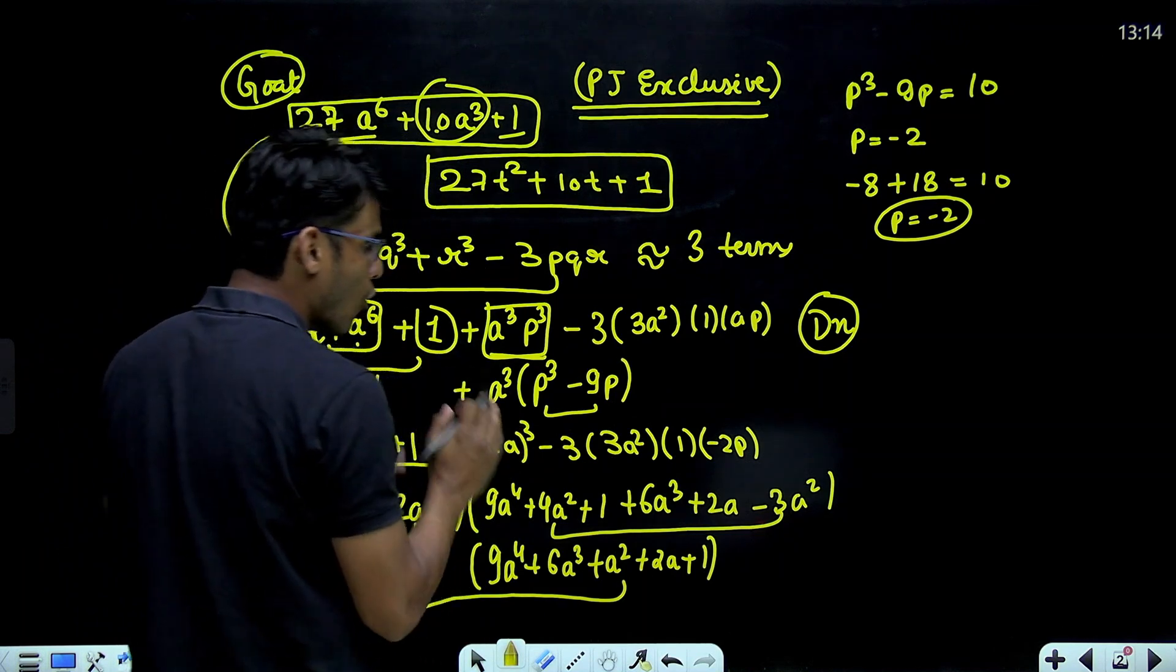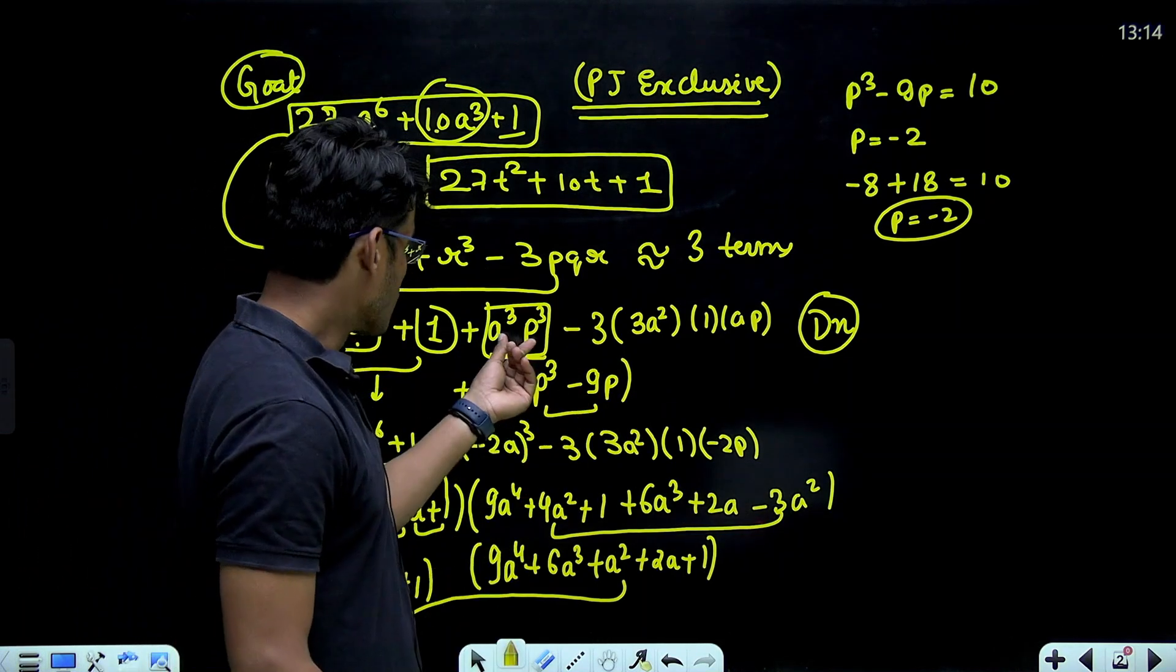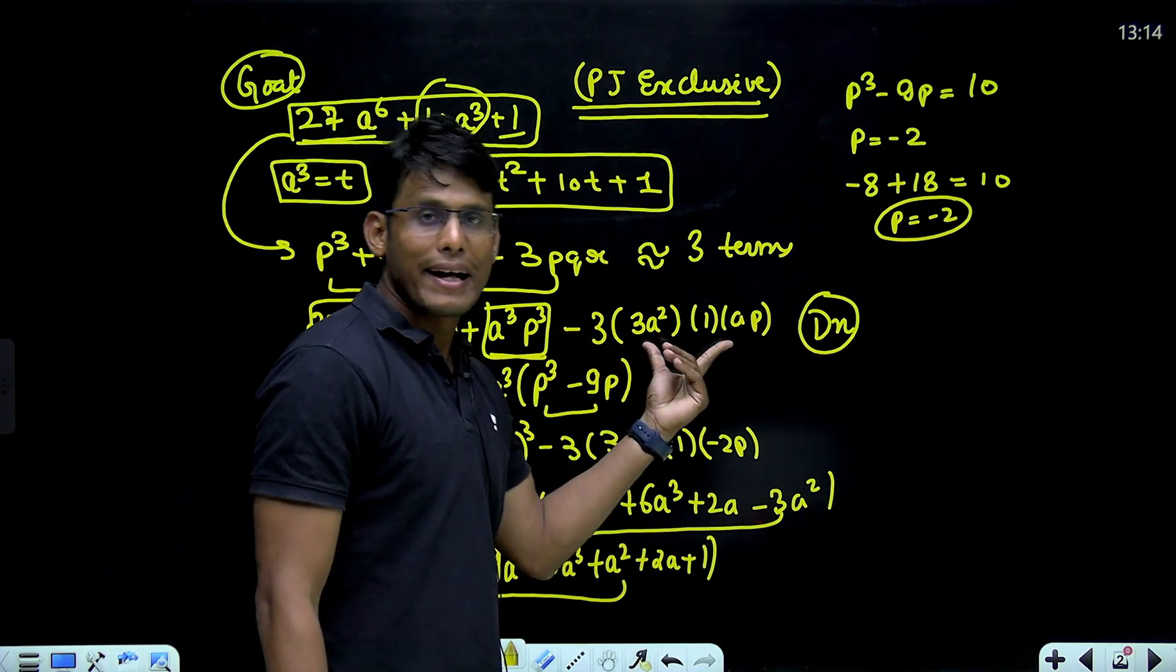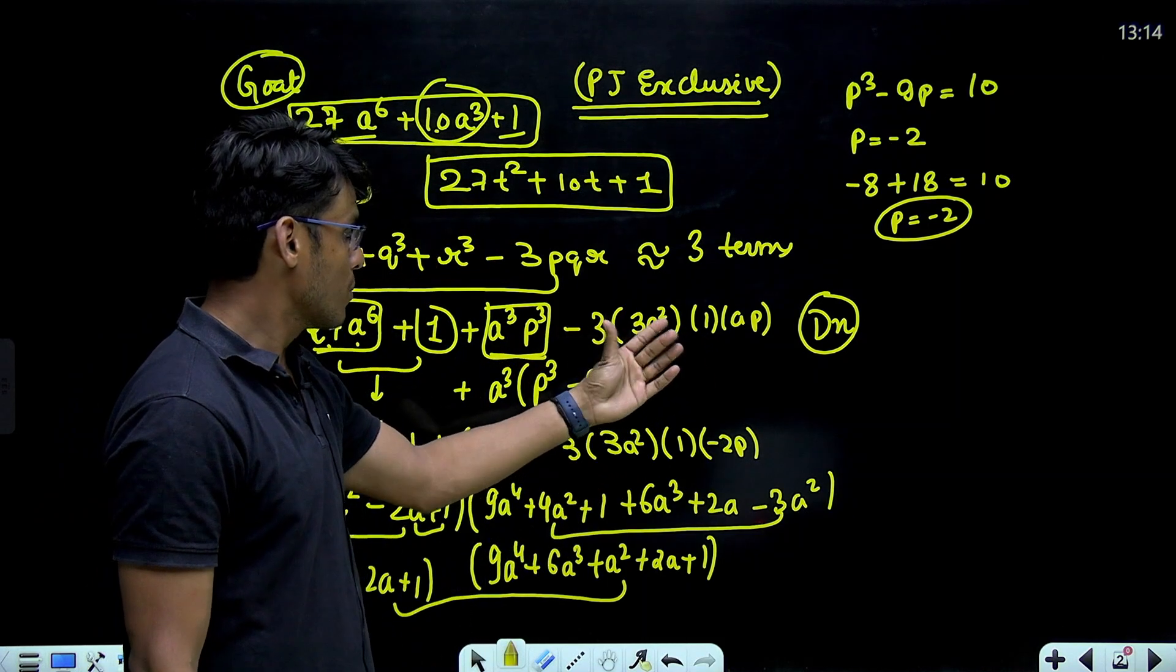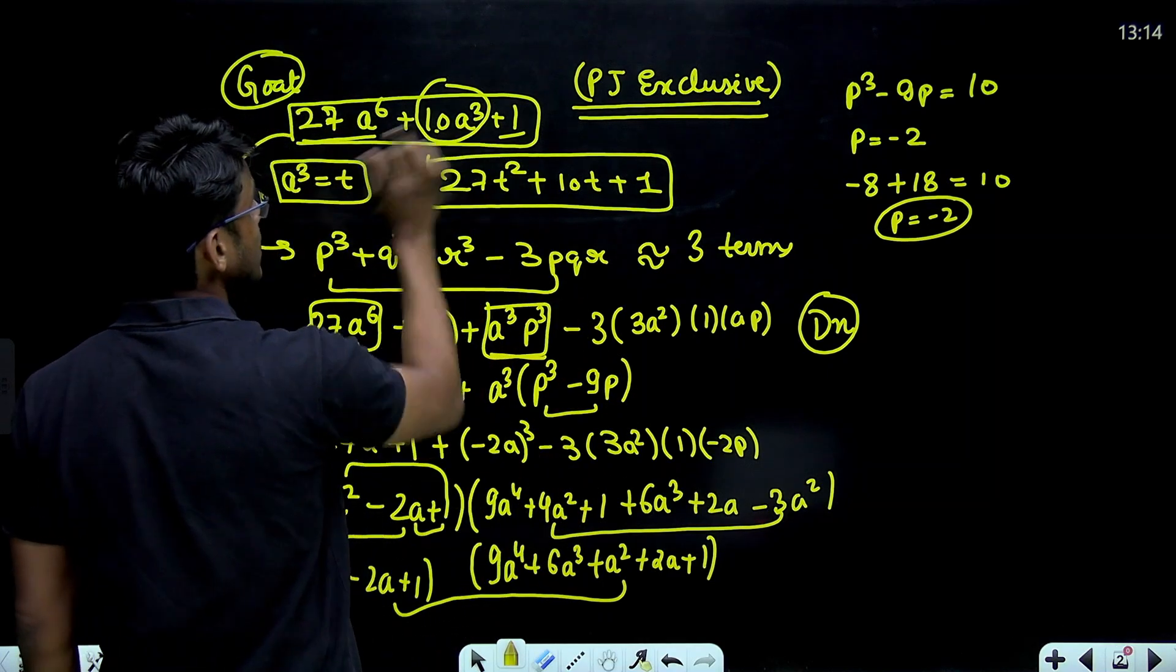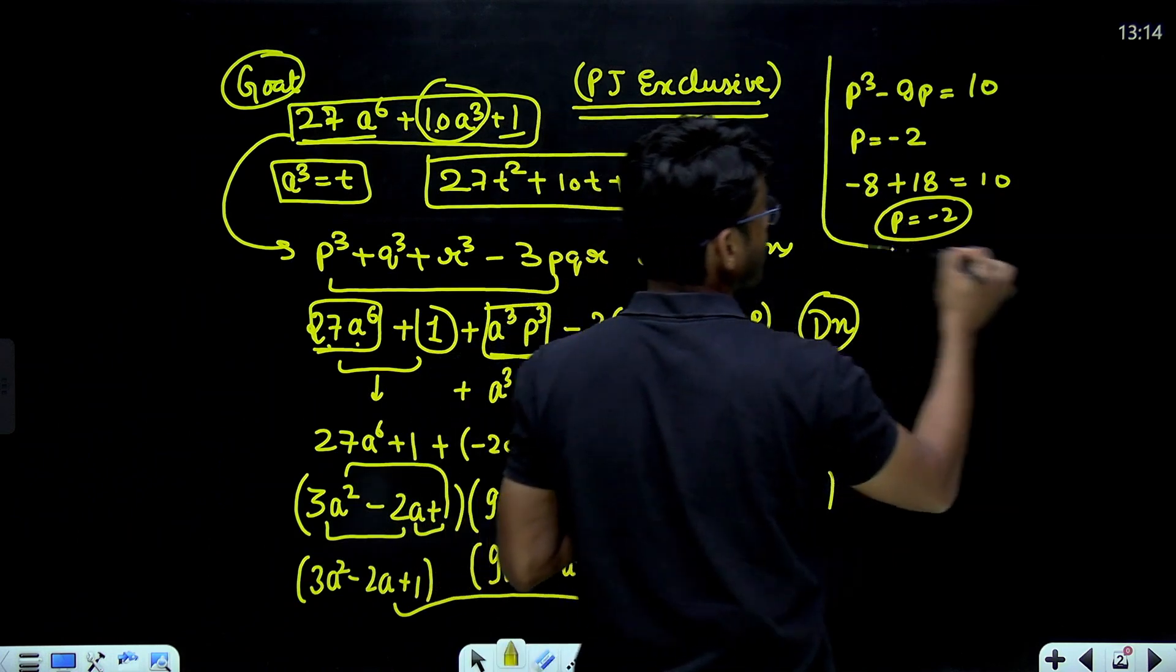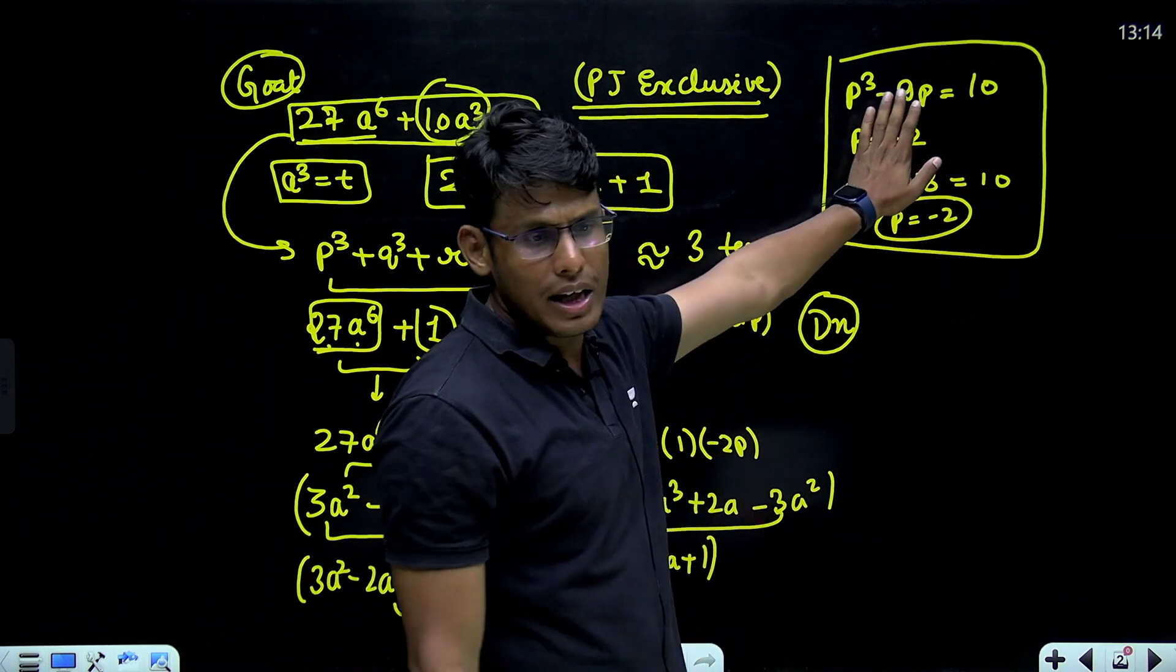So, what is the coefficient of a cube now? a cube is p cube minus 9p. You can see p cube is coming from here, minus 9p is coming from here. Now, what do we have here? p cube minus 9p is equal to 10. So, I have solved it here for you.